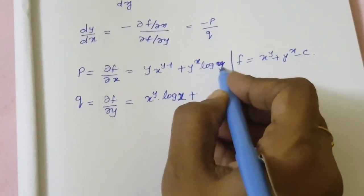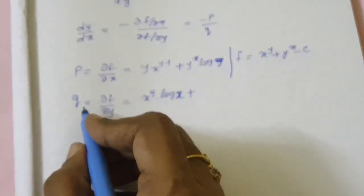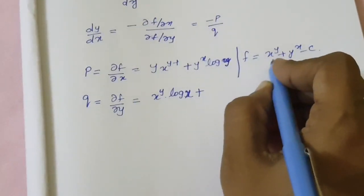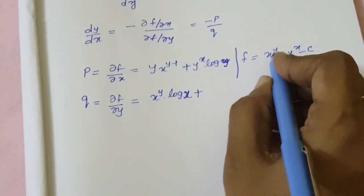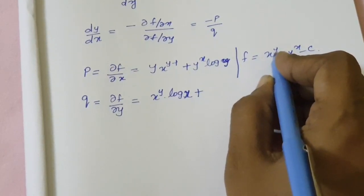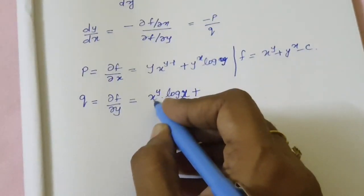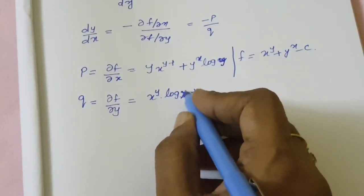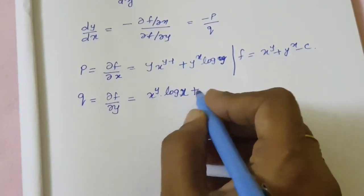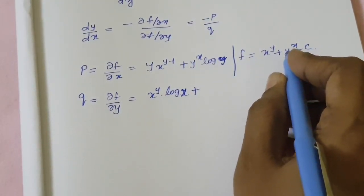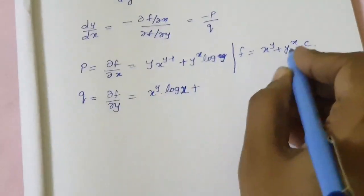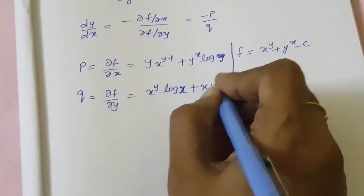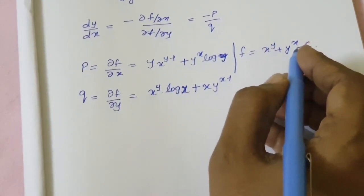Next, find out the value of Q, that is ∂f by ∂y. For the first term x power y, y occurs in the power, so differentiating gives x power y into log x. For the second term y power x, y is in the base, so differentiating the power only gives x into y power x minus 1. The constant c differentiates to 0.